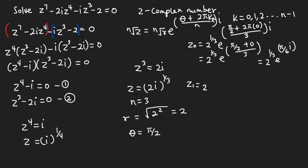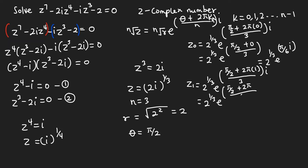For k = 1: z₁ = 2^(1/3) · e^((π/2 + 2π·1)/3 · i). In the bracket we have π/2 + 2π = 5π/2, divided by 3 gives 5π/6. So z₁ = 2^(1/3) · e^(5πi/6). That is the second root for equation two.